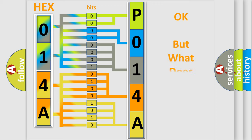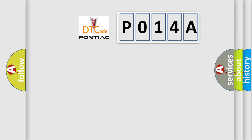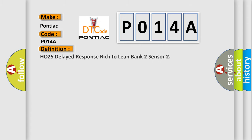We now know in what way the diagnostic tool translates the received information into a more comprehensible format. The number itself does not make sense to us if we cannot assign information about what it actually expresses. So, what does the Diagnostic Trouble Code P014A interpret specifically for Pontiac car manufacturers? The basic definition is: HO2S Delayed Response Rich to Lean, Bank 2 Sensor 1. And now a short description of this DTC code.